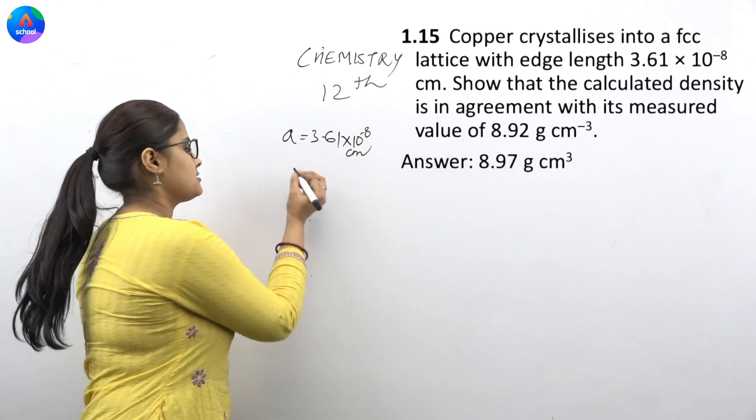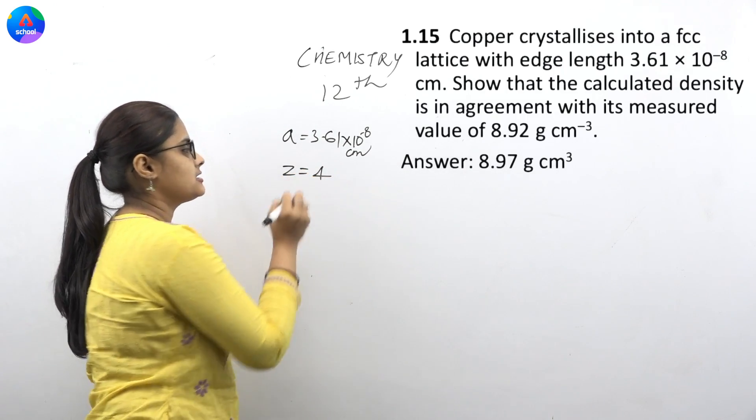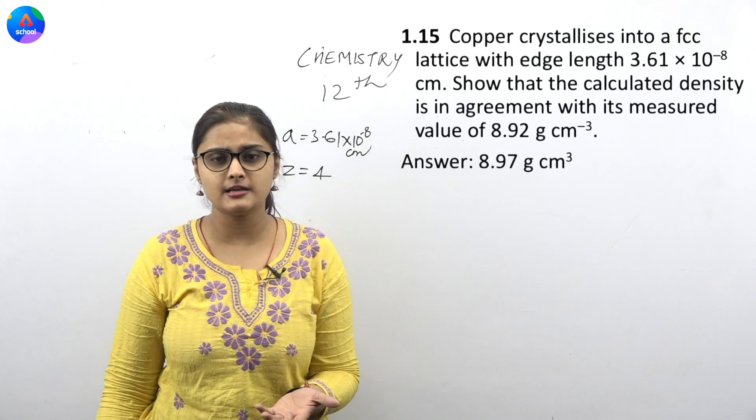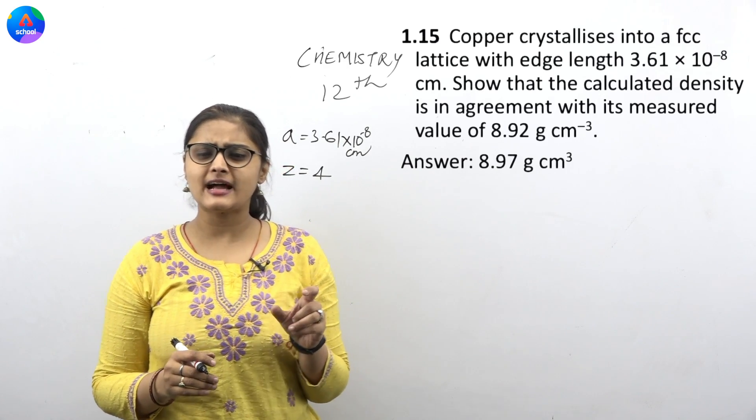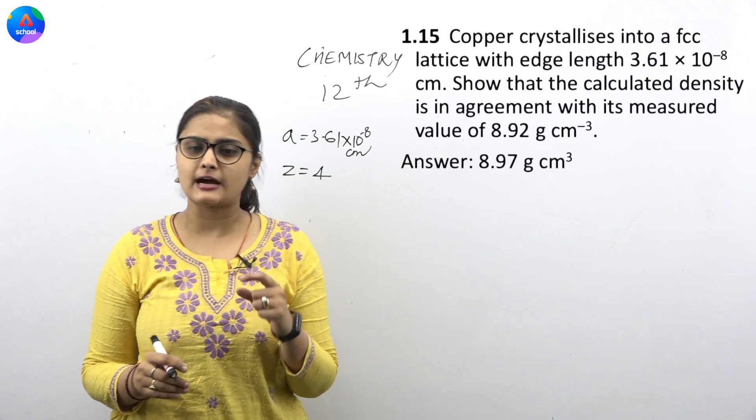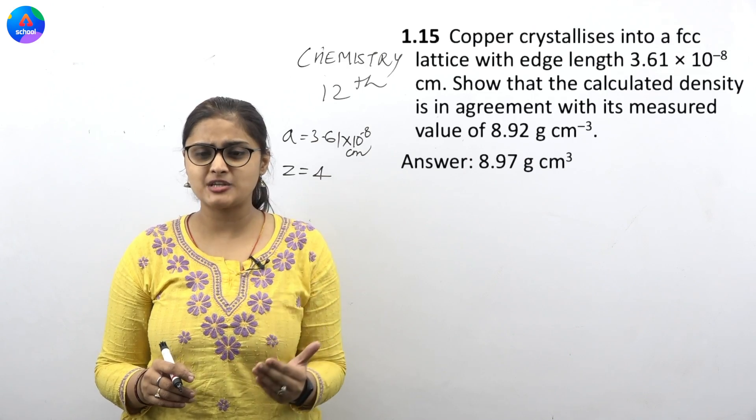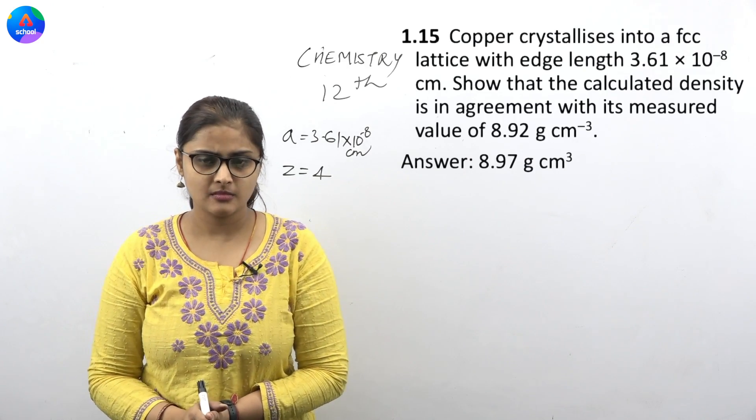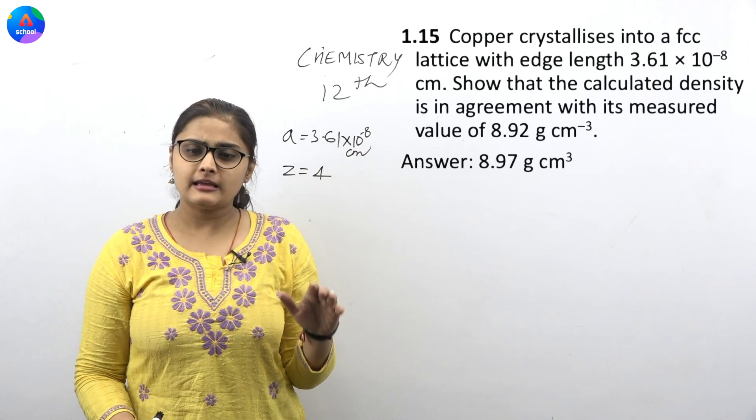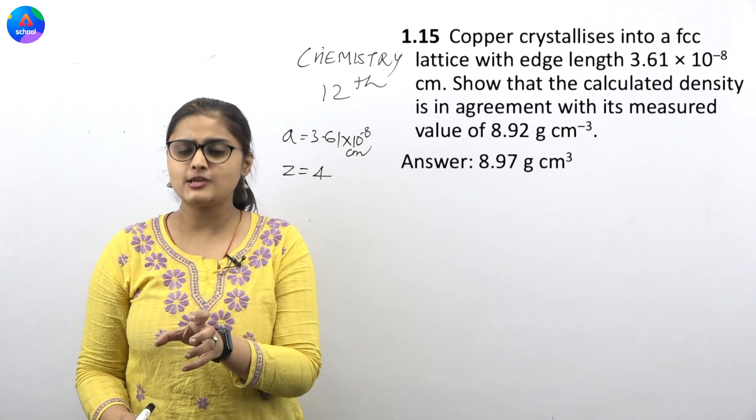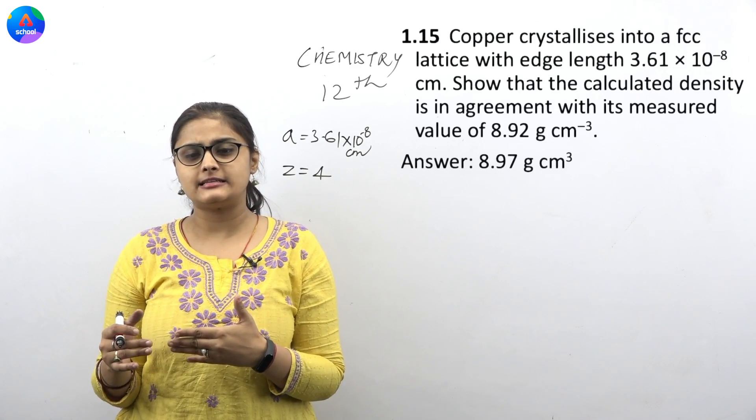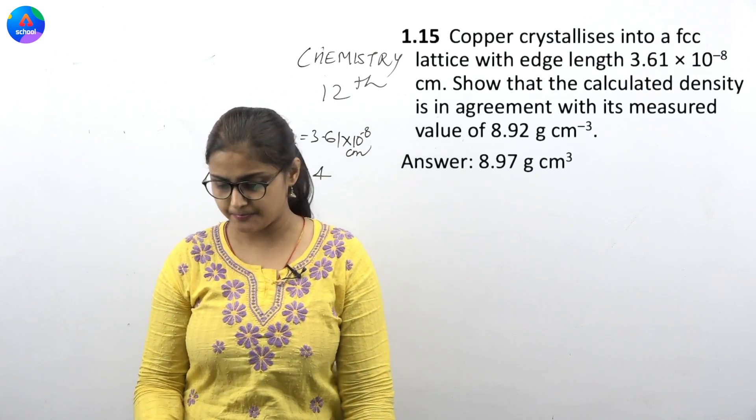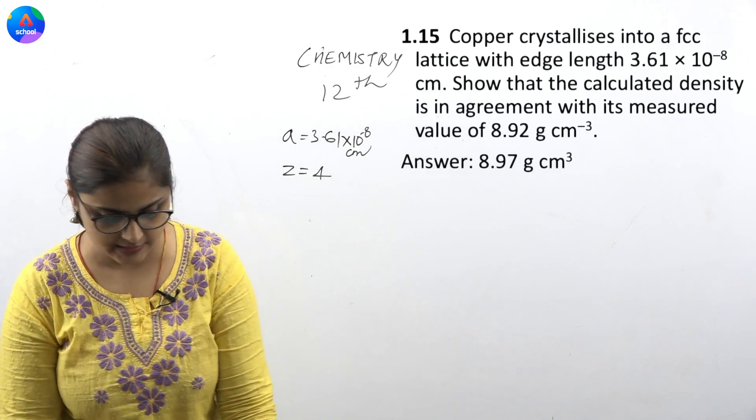After that, it is written that FCC lattice, so Z is equal to 4. You don't have to do anything. Then next one is, show that the calculated density is in agreement with its measured value of 8.92 gram per cm³. So what are you asking? You have to show that the calculated density is in agreement.